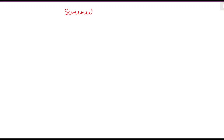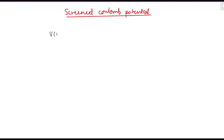Welcome everyone. Today we are going to discuss the Screened Coulomb Potential. We will evaluate the differential cross section for the Screened Coulomb Potential. The Screened Coulomb Potential is given as V(r) = minus Z·e² divided by r, multiplied by e to the power minus r divided by a.